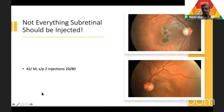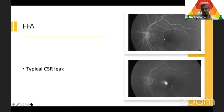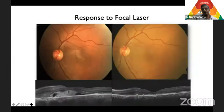Not everything sub-retinal that is hyper-reflective should be injected. A patient who presented after two injections had some sub-retinal yellowish lesion with hyper-reflectivity and sub-retinal fluid on OCT. When FA was done, it turned out to be sub-retinal fibrin with a typical CSR point leak. Navigated laser alone resolved the issue without further injection. So not everything hyper-reflective with fluid is CNVM — don't keep injecting just because there is something hypo-reflective.